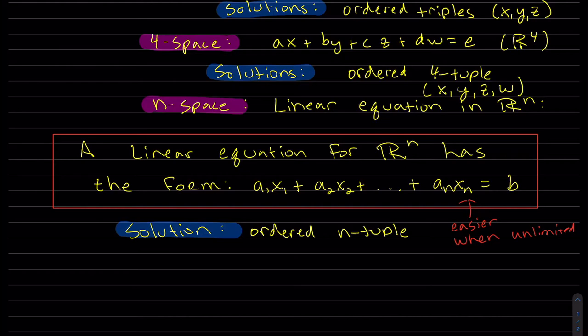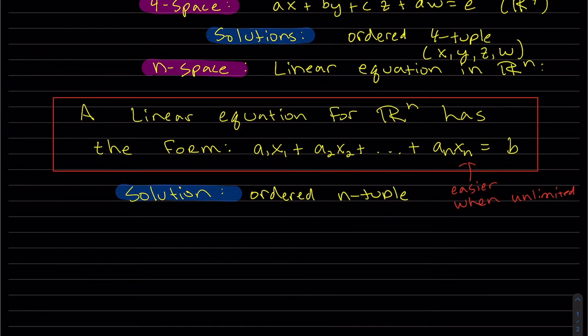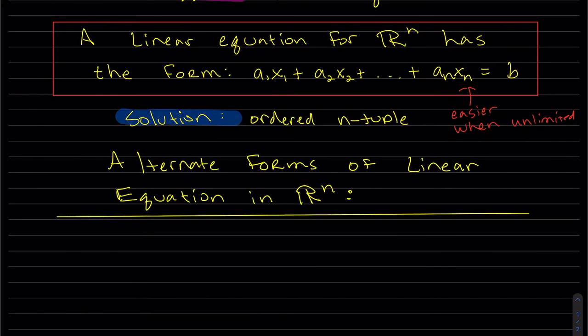So there's many forms of this linear equation in Rⁿ. So let's write some out. Our first is a series notation that adds them up. So it's Σ aᵢxᵢ, where the subscript i equals... We'll start with 1 since that's what we started with right here. And it'll go to n. And then that's equal to, on the right side, b.